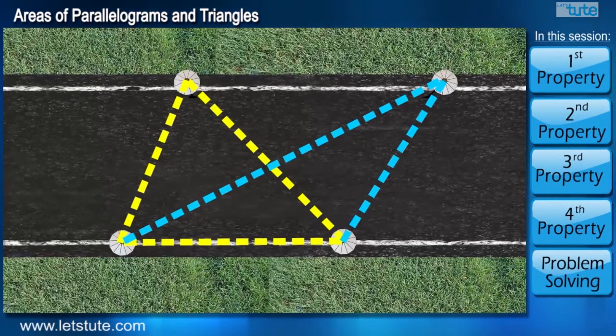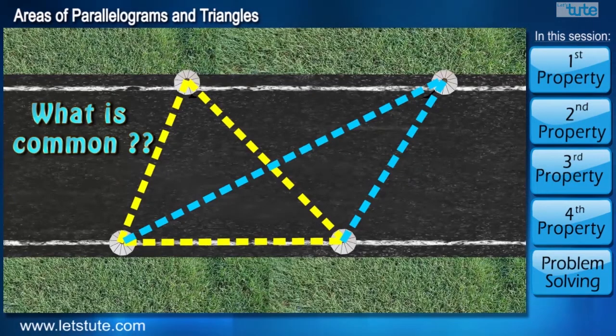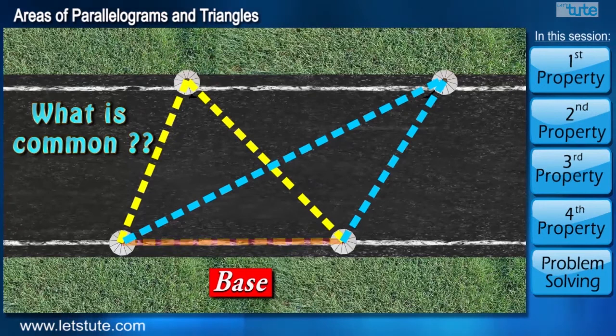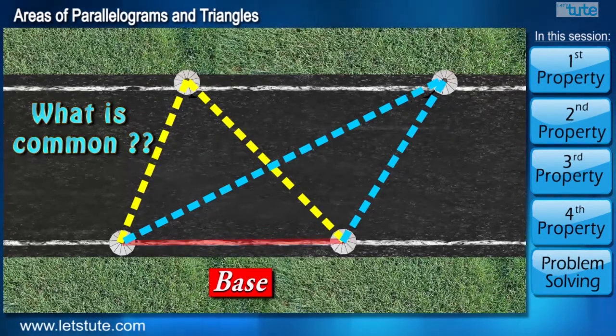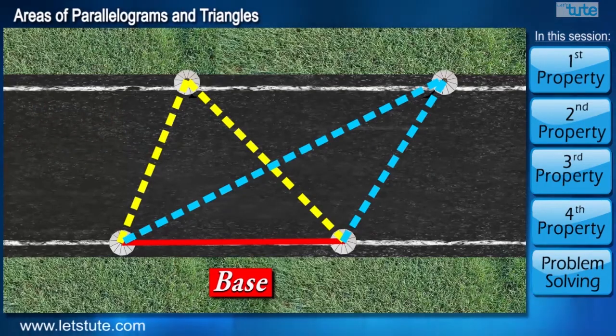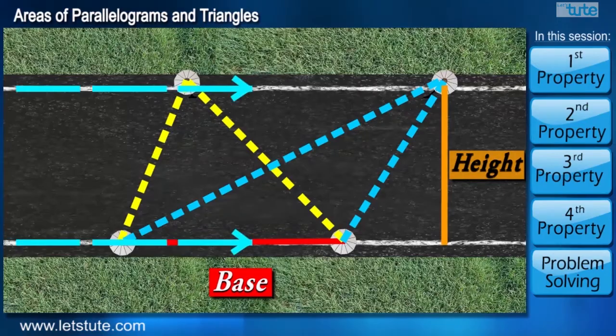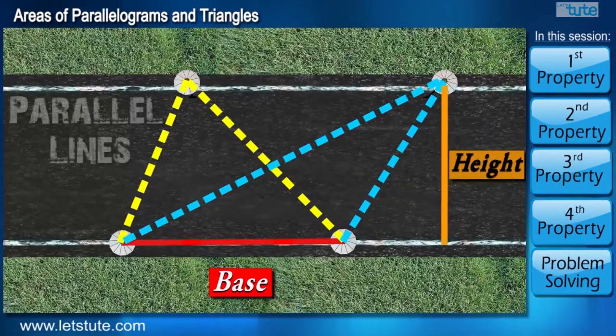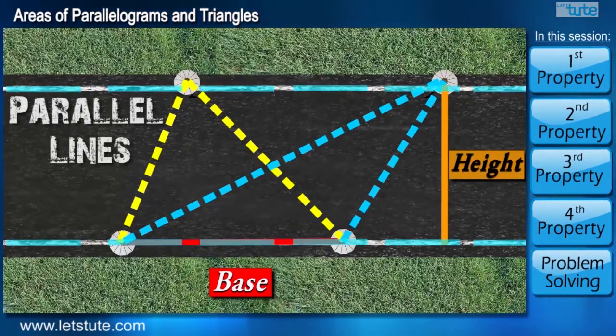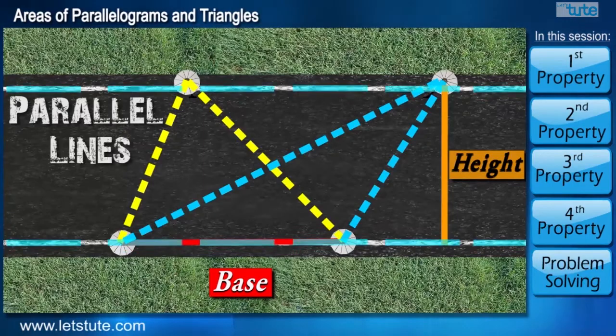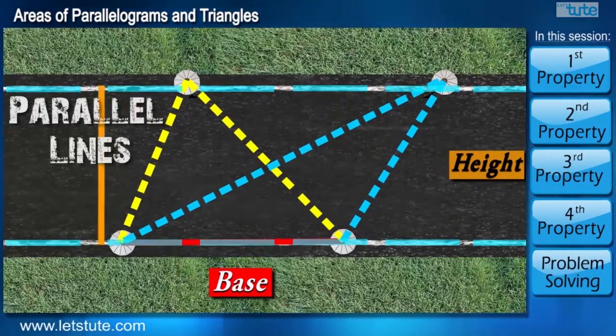So by looking at the diagram, can you tell me what is common between the two triangles? They have a common base and one more thing is common between them. They also have a common height because if we see the boundary of the road, they form parallel lines.